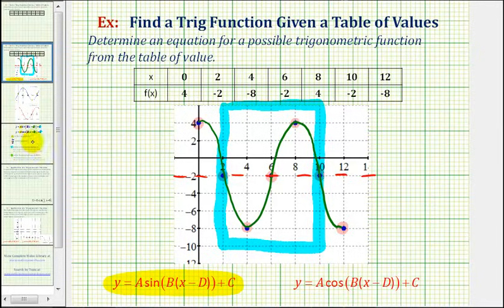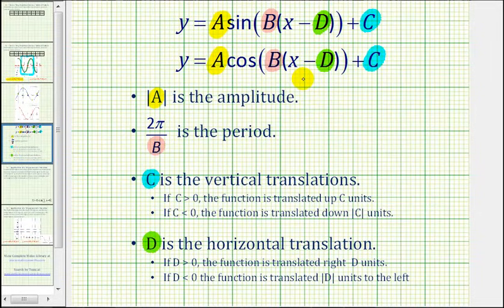For a quick review, for both the sine and cosine function, the absolute value of A is equal to the amplitude. Two pi divided by B is equal to the period of the graph. The value of C affects the vertical shift up or down. If C is positive, the graph is shifted up. If C is negative, the graph is shifted down.